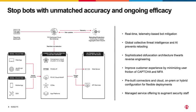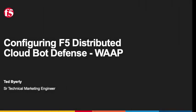So, how are you going to stop these automated threats? The first step on this journey is to recognize you have a bot problem. Don't worry — F5 has an easy solution to quickly implement bot defense in our WAAP product. And now I'm going to transition to showing you the distributed cloud bot defense on WAAP.